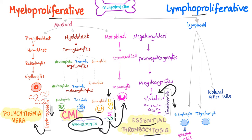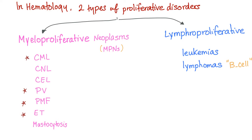Those are the myeloproliferative disorders. We have also talked about lymphoproliferative disorders — leukemia and lymphoma. Those are the lymphoproliferative disorders. So there are two types: myeloproliferative or lymphoproliferative.